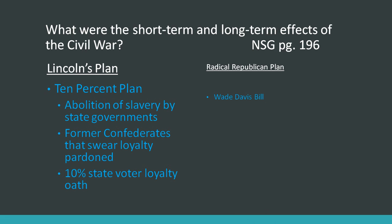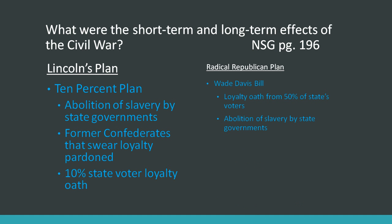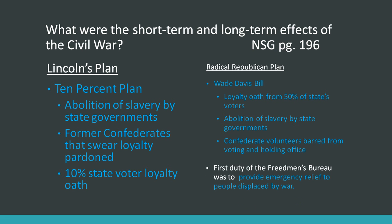The Radical Republicans had a different plan, through the Wade Davis Bill. It required a loyalty oath from 50% of a state's voters, abolition of slavery by state governments, and Confederate volunteers were barred from voting or holding office for a lifetime.